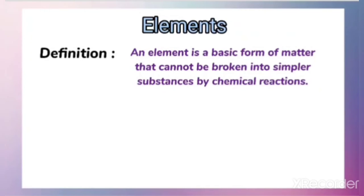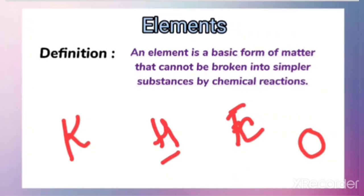Examples of elements are hydrogen, symbol H, which cannot be further broken into simpler substances. Next we have iron, symbol Fe, an element which cannot be broken down into further simpler substances. Similarly we have oxygen, symbol O, potassium, symbol K, and the familiar element copper, symbol Cu.